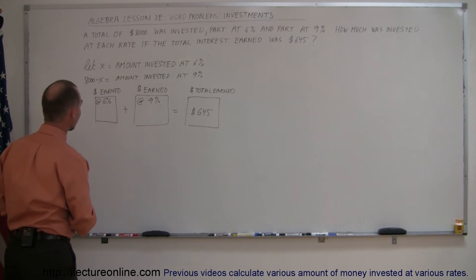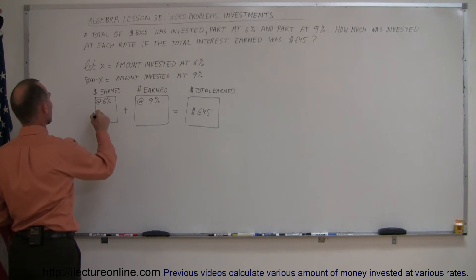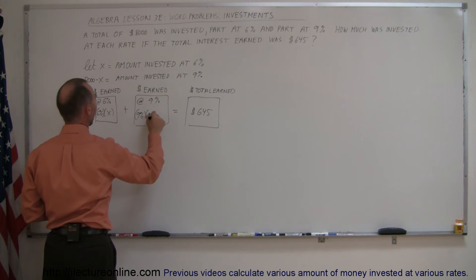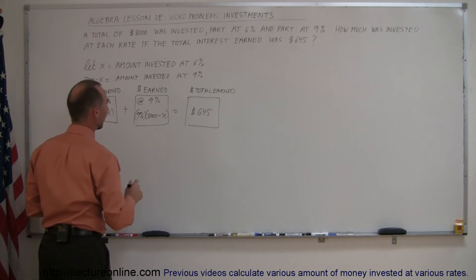How do you calculate the dollars earned at 6%? You multiply the rate of return, 6%, times the amount that was invested, X. Here, you multiply the rate of return, 9%, times the amount invested at that amount, which is 8,000 minus X. And so that must add up to the total.